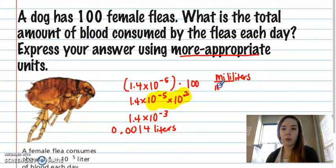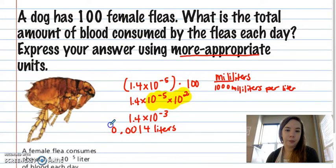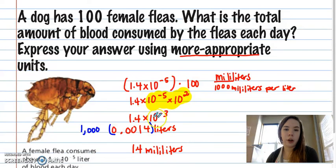Milli means 1,000. This is a prefix. It means 1,000. So 1,000 milliliters per liter. So if I take this times 1,000, I get 1.4 milliliters. And I don't have to write it in scientific notation at all anymore. This goes away when you change from liters to milliliters because you're multiplying by 1,000, which is the same as 10 cubed. And then these will end up canceling out. 1.4 milliliters.